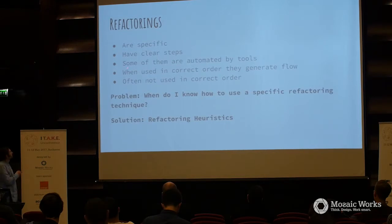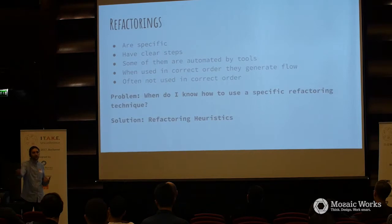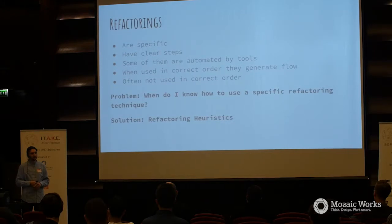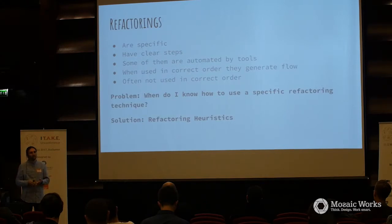The problem is I see people don't use refactorings in the correct order. Correct order can be any order as long as we have flow. If I have a blockage while refactoring, it means I don't know enough — either about the problem, the code space, or I don't have enough good smells. That's for me the refactoring heuristics.